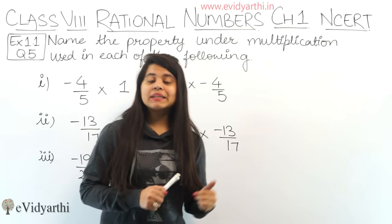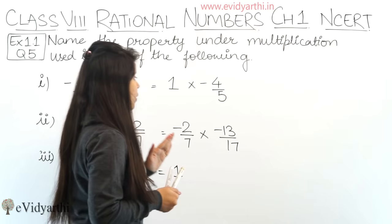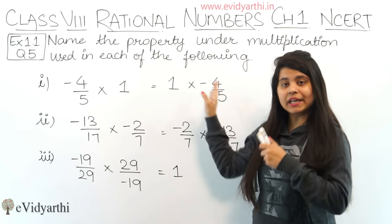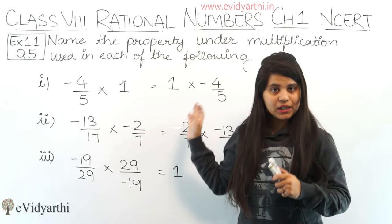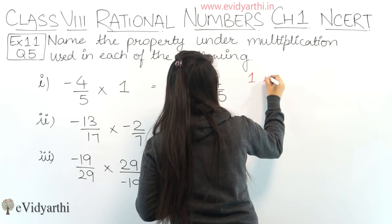The first one is minus 4 upon 5 into 1 equals 1 into minus 4 upon 5. If you take a rational number and multiply it by 1, you get the same number back. In this type of situation, 1 is considered as the multiplicative identity. So we will write: 1 is the multiplicative identity.